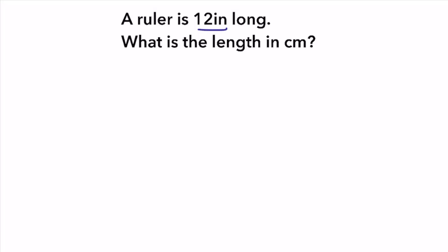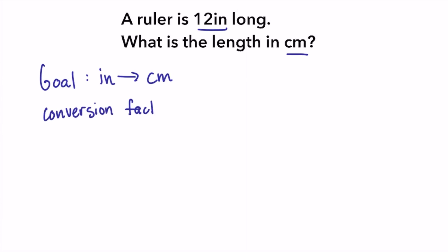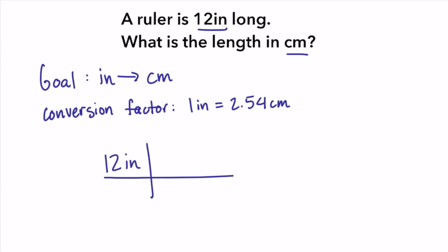A ruler is 12 inches long. What is the length in centimeters? Our goal is to convert inches to centimeters, using the conversion factor one inch equals 2.54 centimeters — the same amount of length, just with two different units. We start by writing our given, 12 inches, then multiply by the conversion factor putting inches on the bottom and centimeters on the top: one inch and 2.54 centimeters.